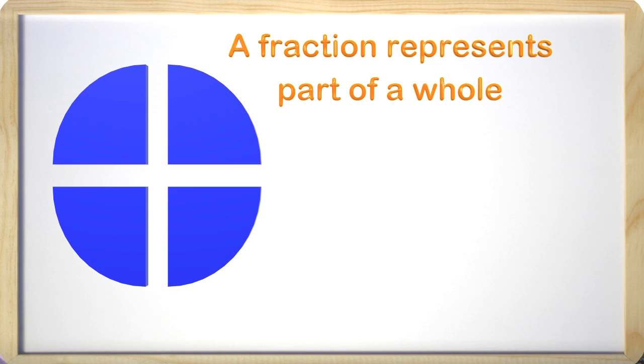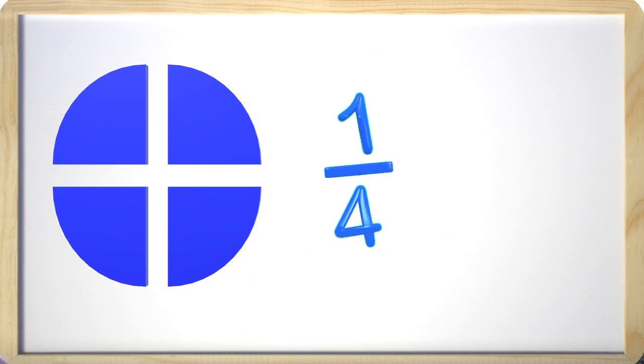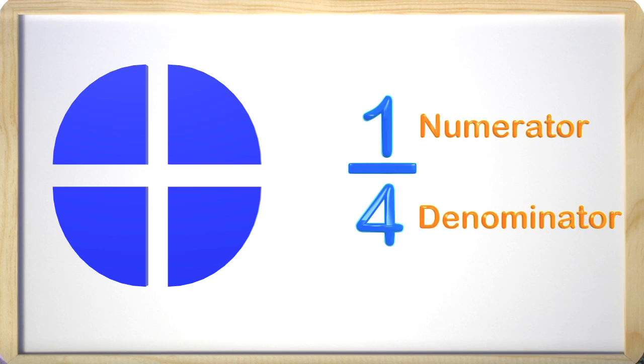We can see fractions in several ways, like with pictures or numbers. You might remember what the fractions look like. Here we have a fraction that is one-fourth. In a fraction, the top number is the numerator and the bottom number is the denominator.